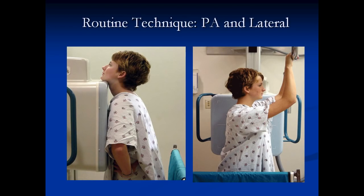The closer the heart is to the film, the better idea we're going to get of its size. The second image on the right is the lateral — how we take a lateral film. You can see that her left side is up against what we call the Bucky, or the image detector. When we take this film, the x-ray comes from where you're standing, passes through the patient to hit the detector on the other side. Those are the standard ways that we take a view of the chest.